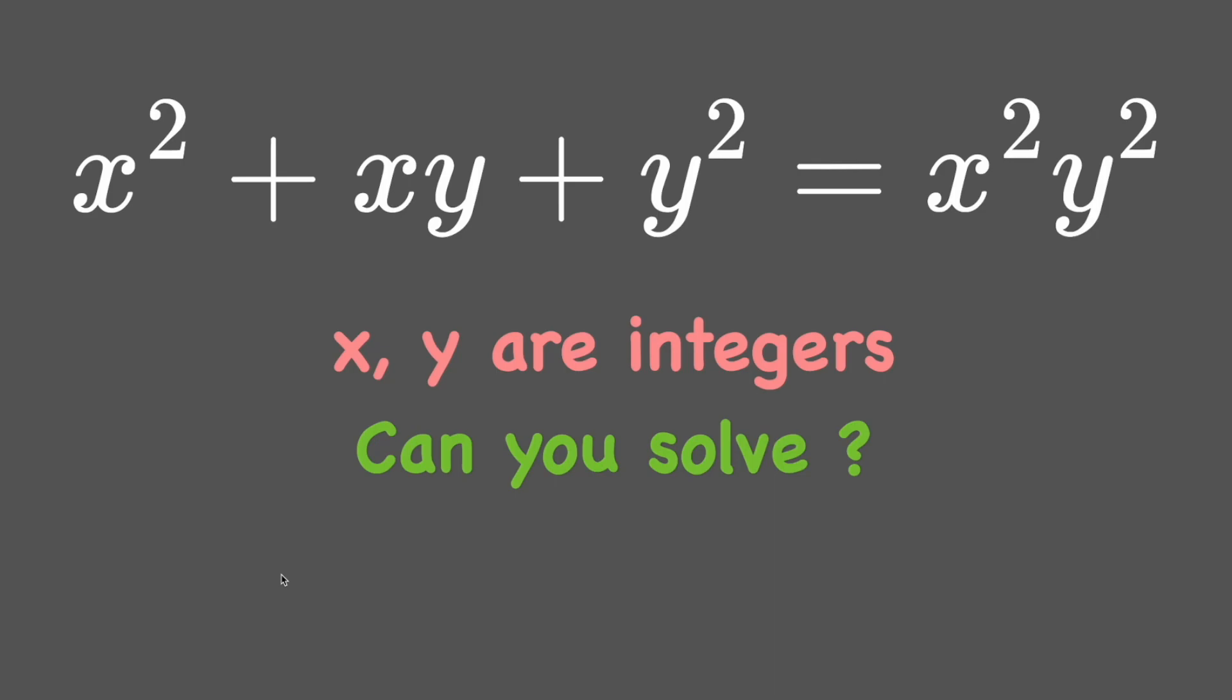Hi, welcome back. Today we are going to solve the arithmetic equation x² + xy + y² = x²y² in which x and y are integers. Now let's get started.